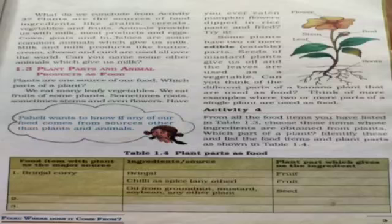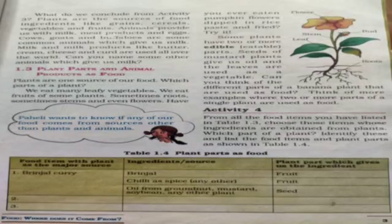Animals provide us with milk, meat, eggs, and milk products. From milk we get milk products like butter, cream, cheese, and curd. These items are used all over the world, and you can name some more animal-sourced items.